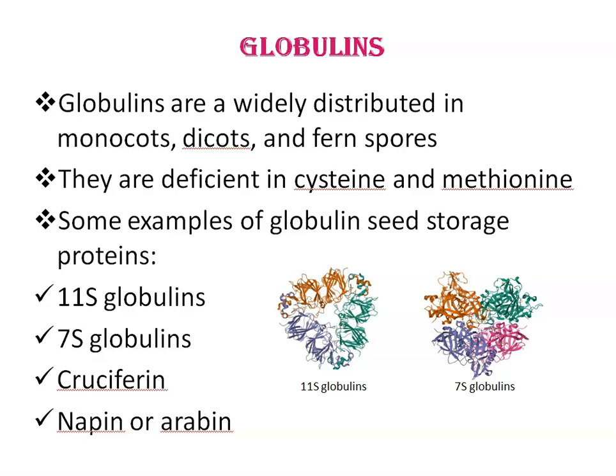Globulins are a widely distributed group of storage proteins found in monocots, dicots, and fern spores. They are classified based on their sedimentation coefficient and are nutritionally significant, being deficient in cysteine and methionine amino acids. Examples include 11S globulin, 7S globulin, cruciferin, and napins. 11S globulins — also known as legumins — are found in most dicotyledonous species and are the major storage proteins in rice and oats, making up about 70–80% of the total protein in these grains.